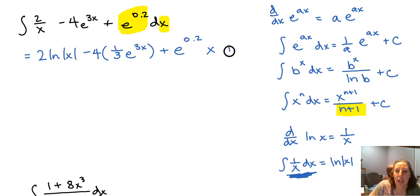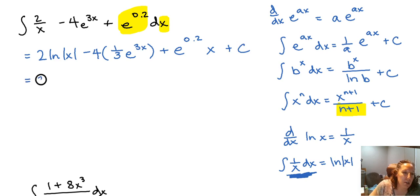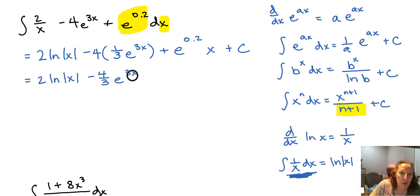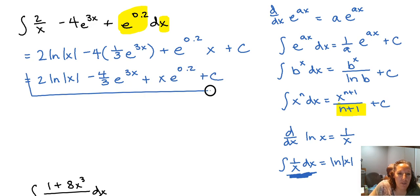We always have a plus C on these antiderivatives. Cleaning this up, we get 2 times the natural log of the absolute value of x, minus 4 over 3 times e to the 3x, plus x times e to the 0.2, plus C.